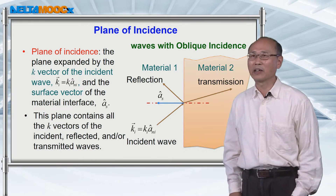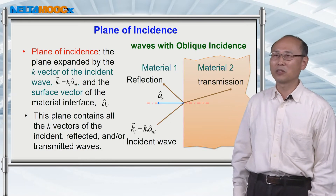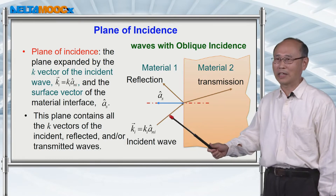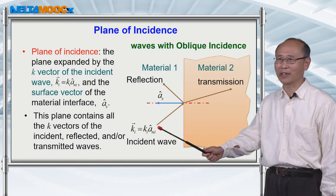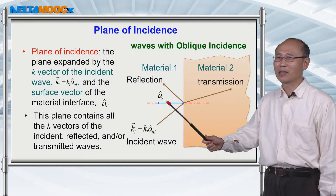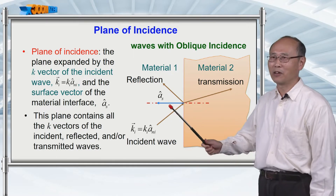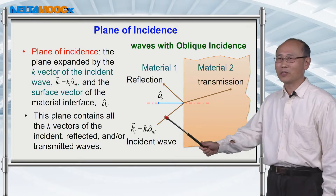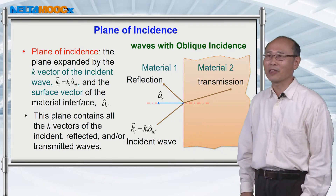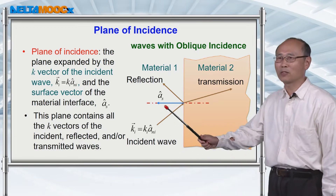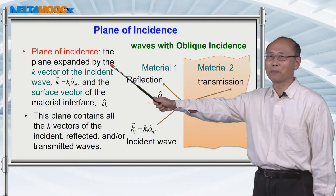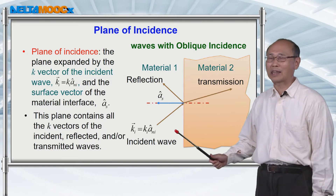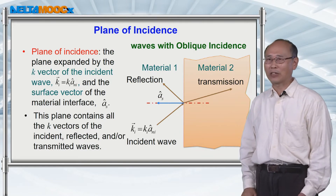Usually two lines can define a plane. We pick the first line to be the incident wavefront vector a_i, and the second direction along the surface normal of this boundary. With these two lines, we define the plane expanded by these two lines to be the plane of incidence. So when you look into this problem, first identify the plane of incidence.